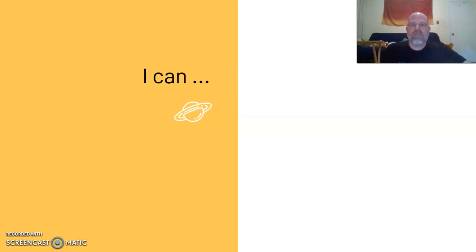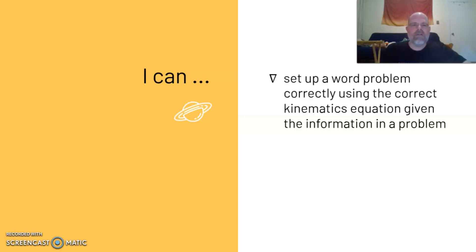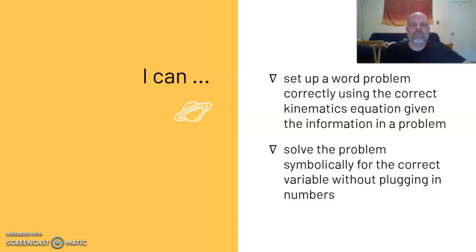The success criteria for this lesson are: I can set up a word problem correctly using the correct kinematics equation given the information in a problem, and I can solve the problem symbolically for the correct variables without plugging in numbers.